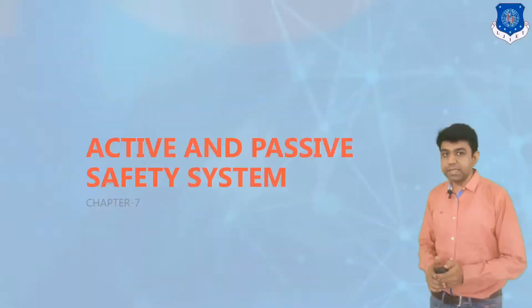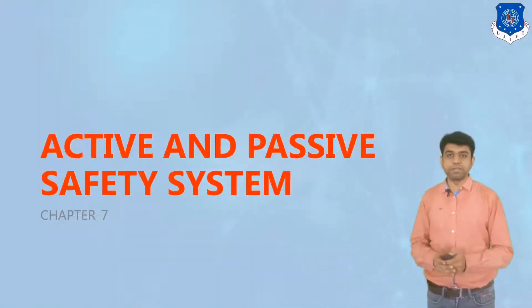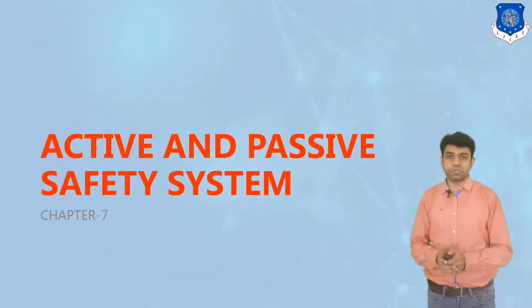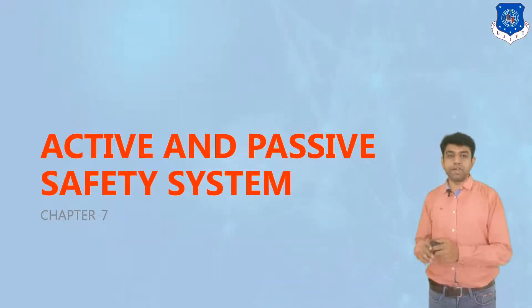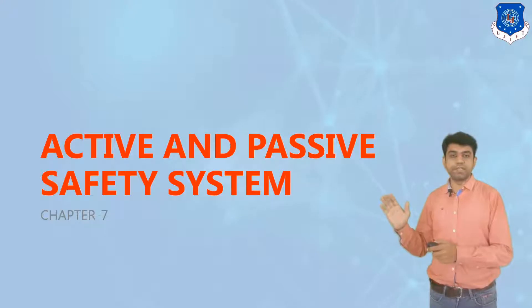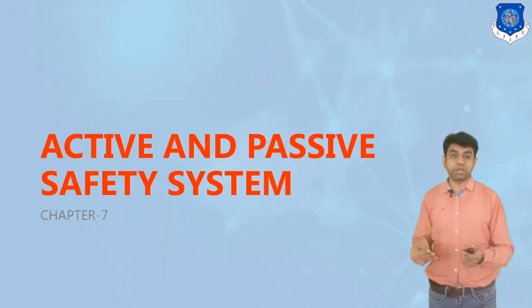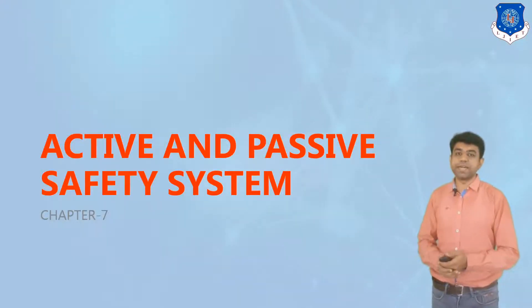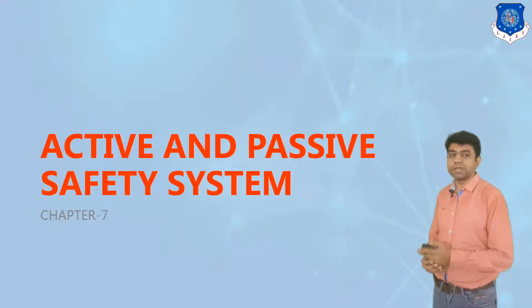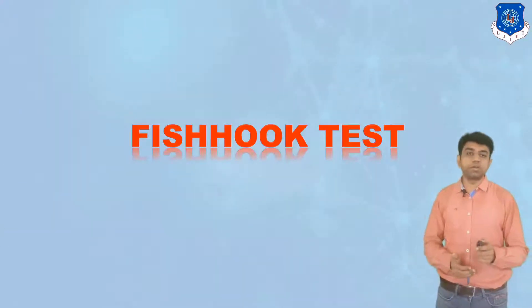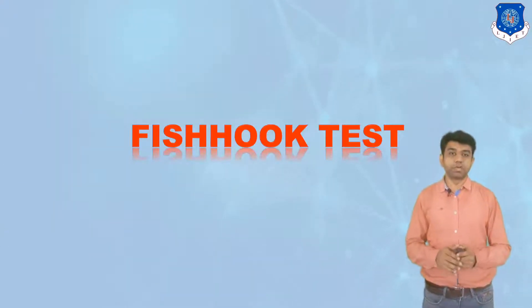In today's lecture, we are going to continue with our seventh chapter, that is Active and Passive Safety System. We have already covered the definition part and discussed different tests related to Active and Passive Safety System. Our next topic in this chapter is the fish hook test.